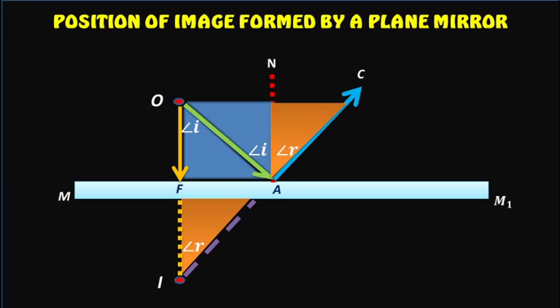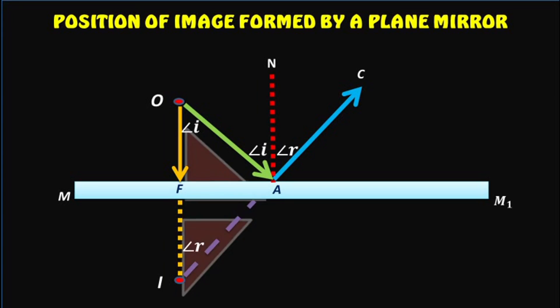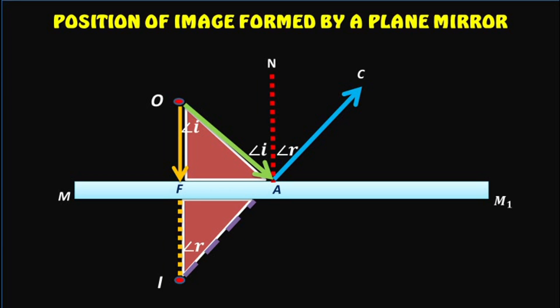Now let us consider the triangles AOF and AIF. Angle AOF is equal to angle AIF. Angle AFO is equal to angle AFI, both of them are 90 degrees.